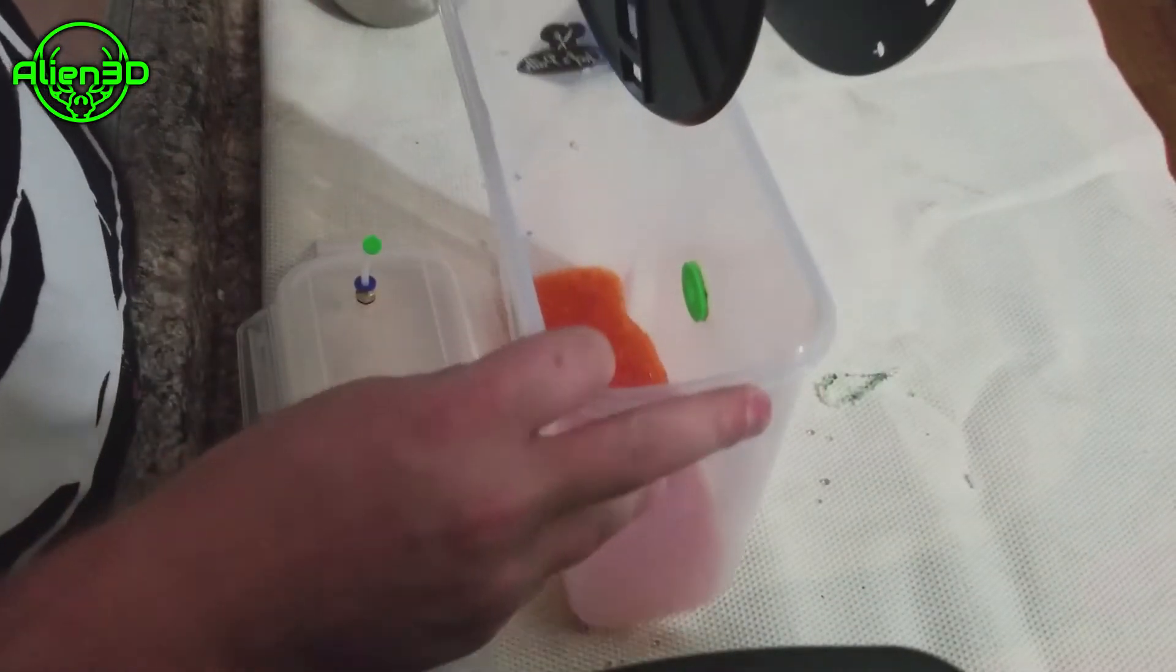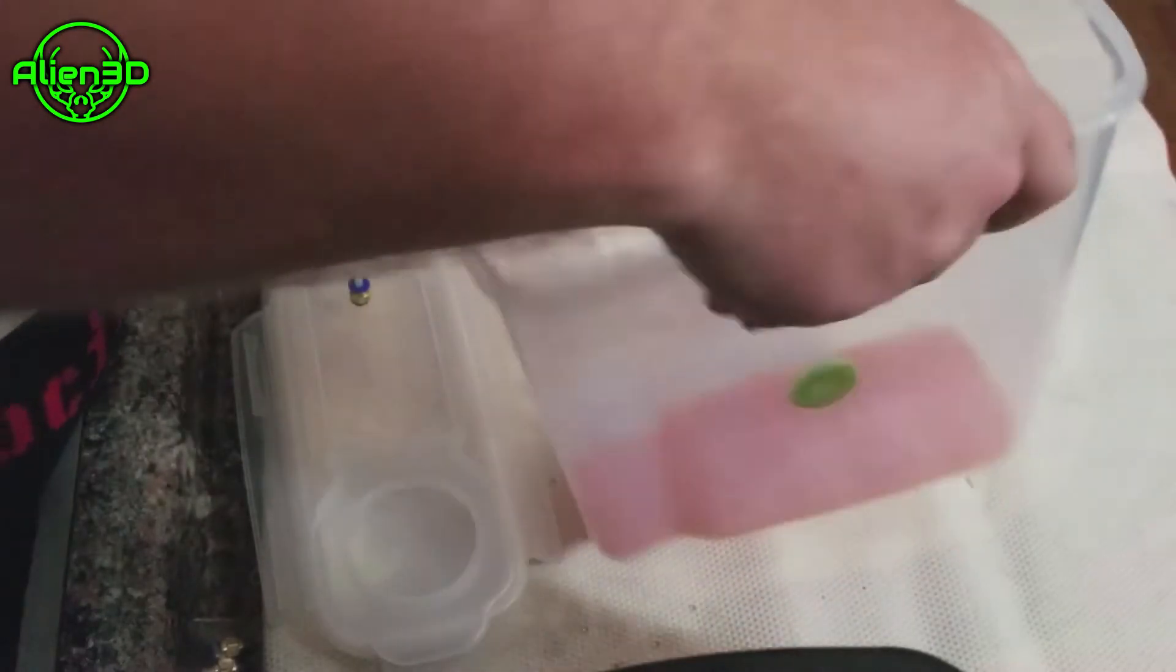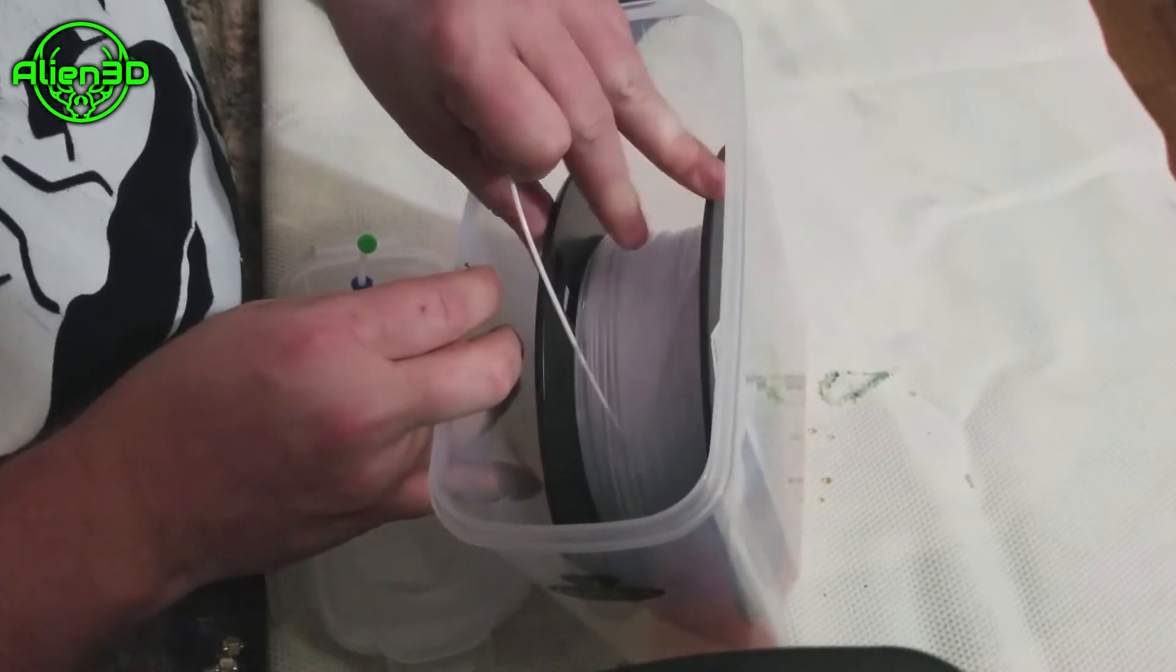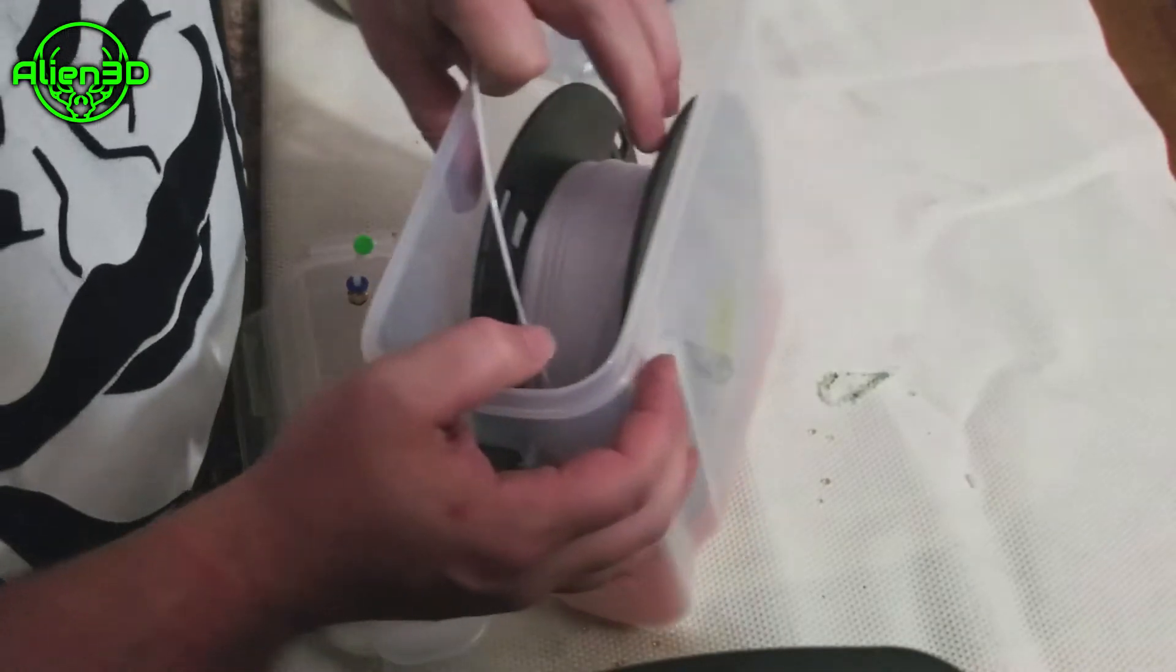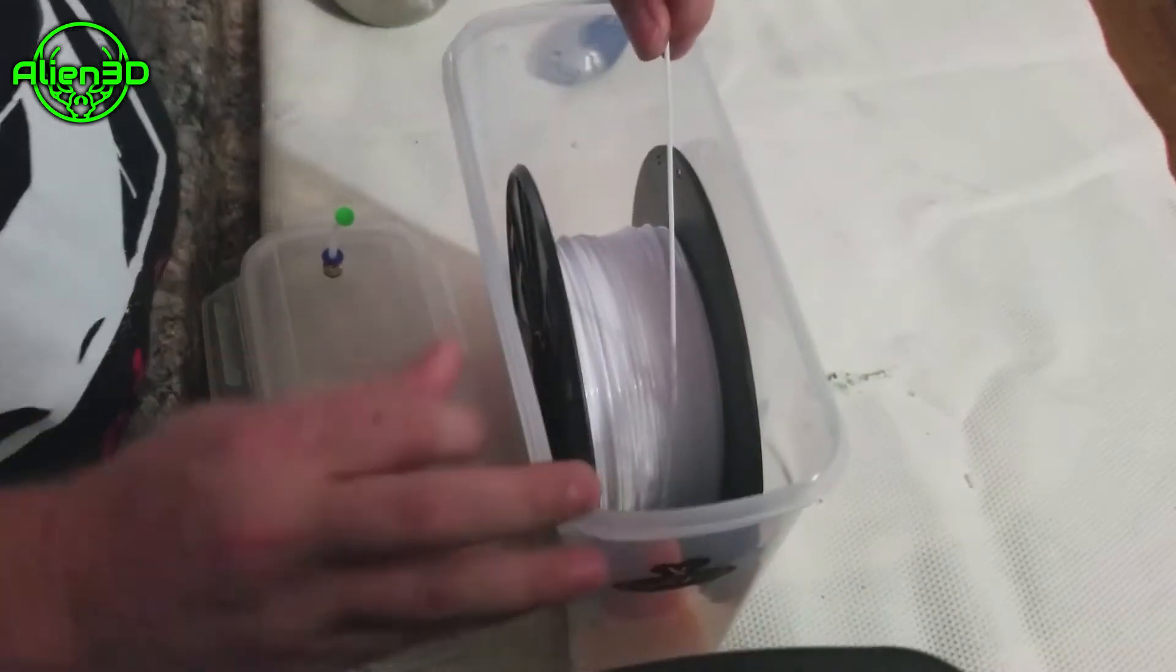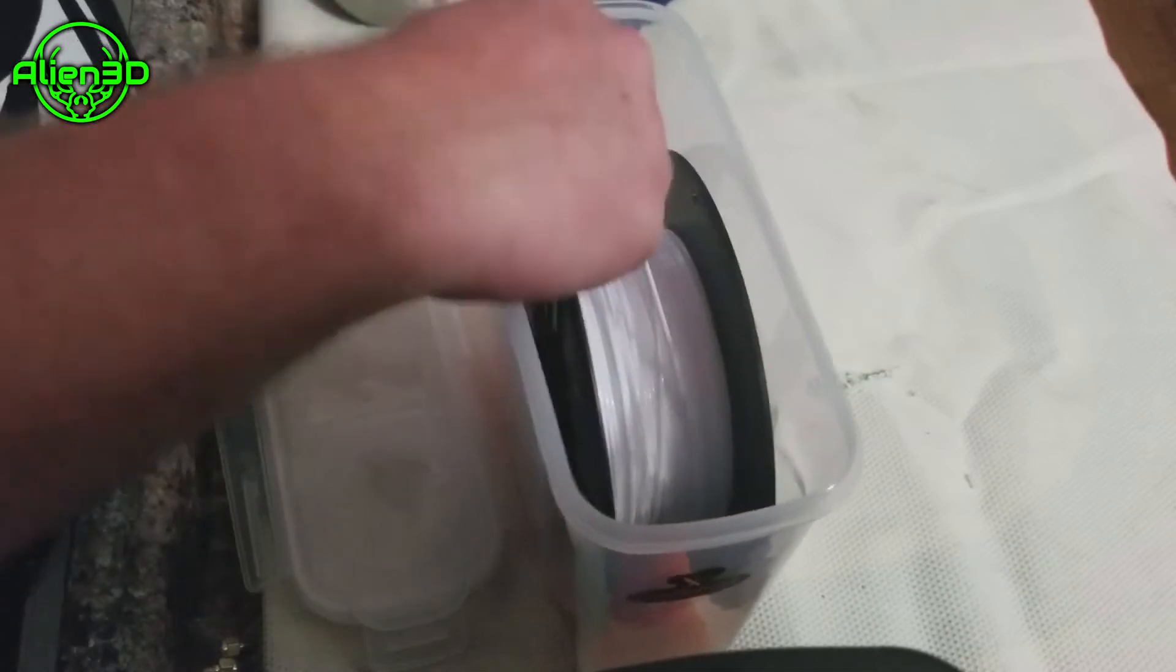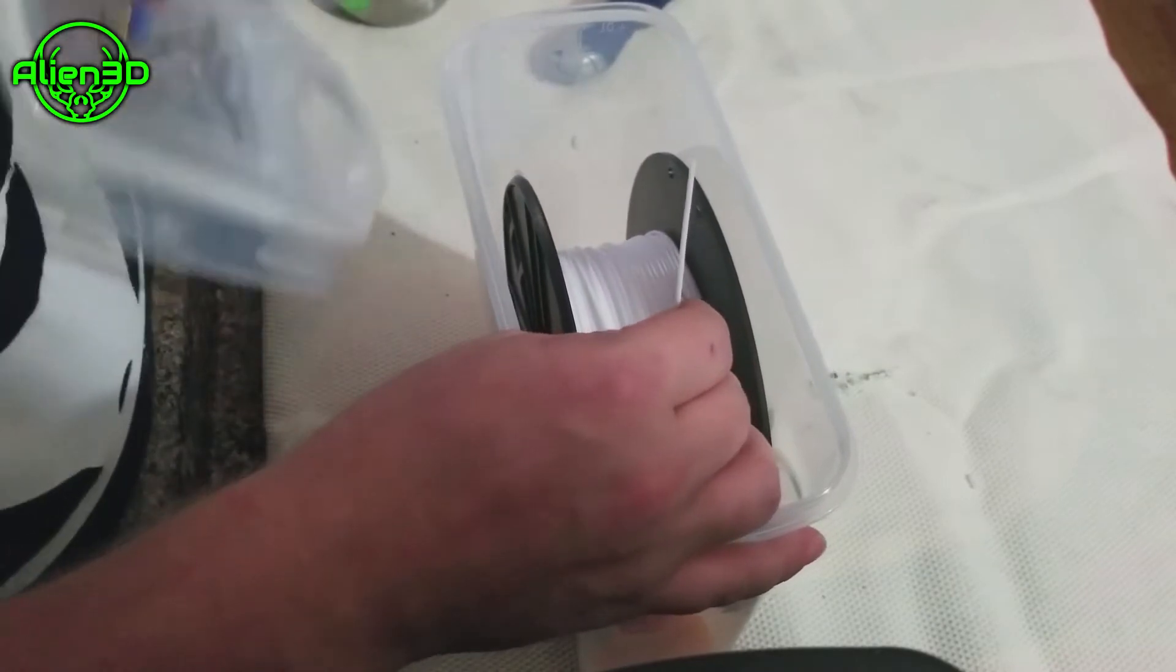Then we're going to put the spool in here. It doesn't really matter which direction it goes, but I did make one of the sides a little longer just because of the alignment. Make sure they're both in there. This slides pretty easily - I don't know why it's making so much noise, I think that's the plastic on the spool.